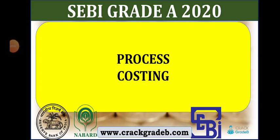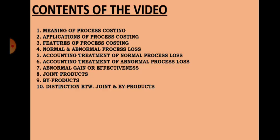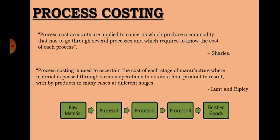Hello friends, welcome to Crack Rate, the online learning platform. Today we will discuss process costing. The contents of the slides are: meaning of process costing, application of process costing, features of process costing, normal and abnormal process loss, accounting treatment of normal and abnormal process loss, abnormal gain or effectiveness, joint products, by-products, and distinction between joint and by-products.